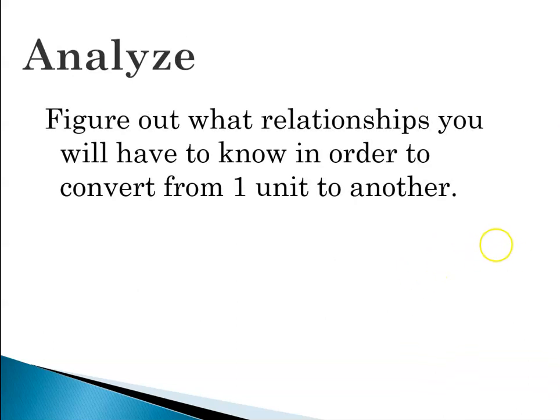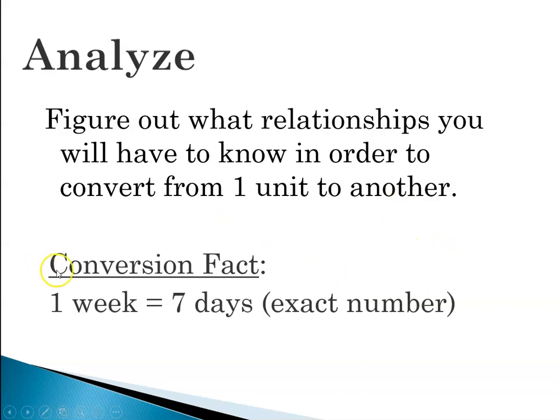So we have to figure out some relationships that we will have to know in order to convert from one unit to another unit. So in this case, our conversion fact is one week is equal to seven days. And again, this is an exact number.